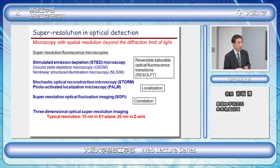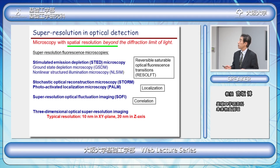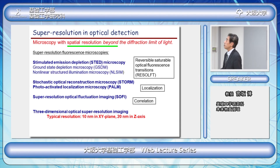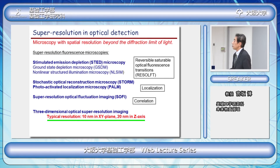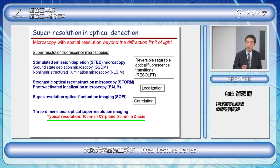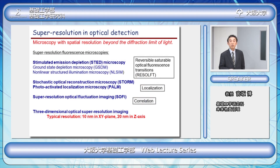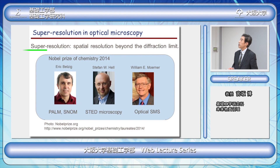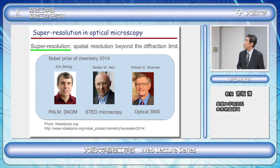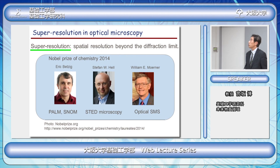This slide shows many kinds of microscopic techniques accumulated to now. We can now get a typical resolution of 10 to 20 nanometers along the z-axis. This type of technique is used as super-resolution in optical detection. For the development of super-resolution, three researchers received the Nobel Prize in Chemistry in 2014 — Dr. Betzig, Dr. Hell, and Dr. Moerner.